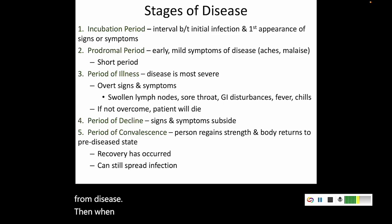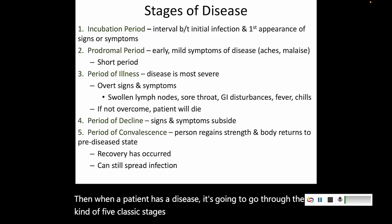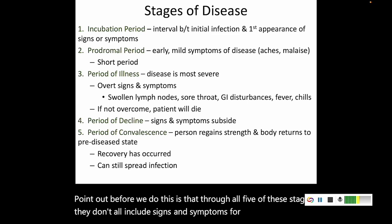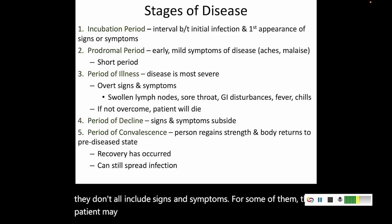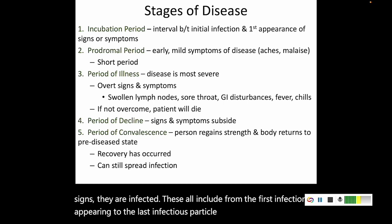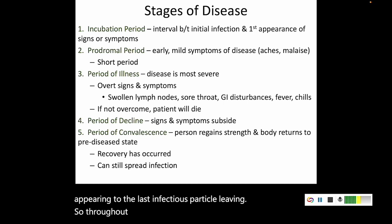When a patient has a disease, it's going to go through five classic stages. One thing to note: through all five stages, they don't all include signs and symptoms — for some of them the patient may feel fine. But for all five stages, they are infected. These stages span from the first infection appearing to the last infectious particle leaving, so throughout all of these stages, your patient can spread disease.